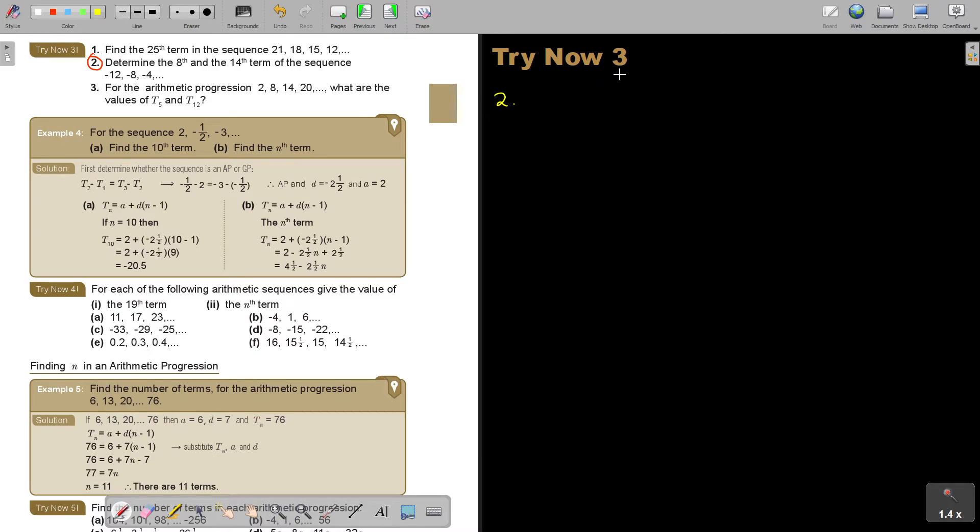Determine the 8th and the 14th term of this sequence. Now, in this case, they don't tell you it's an AP or a GP. So I think it's just good after you write it down, just to make sure it's an AP or a GP. Now, in this case, if you say negative 8 minus negative 12, you're going to get 4. And you're going to get negative 4 minus negative 8, you're going to get 4. So you can test it. Therefore, it's an AP.